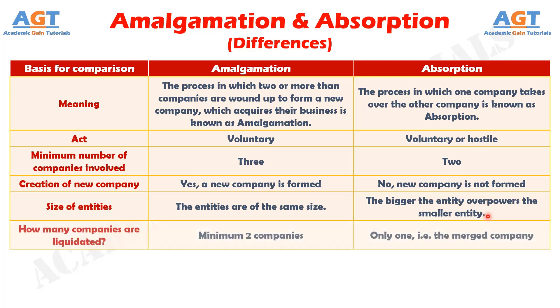Difference number 6: Minimum two companies are liquidated in amalgamation, whereas only one — that is, the merged company — is liquidated in absorption.